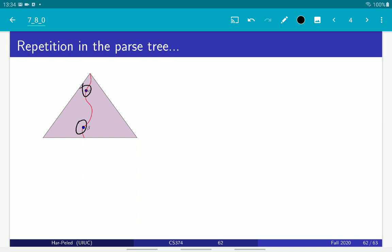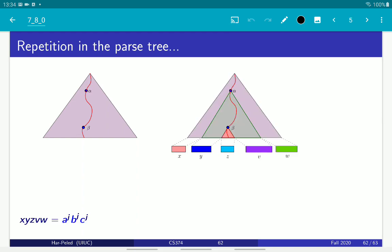Okay, so now we look at the sub-trees of the parse tree that will generate, right? So, they essentially break the output string into five pieces. The part before, the first thing, the internal one before the second thing, the middle one, the one later, and so on. So, there are those five strings, x, y, z, v, w, and they must be equal to the string being generated, which is a^j b^j c^j.